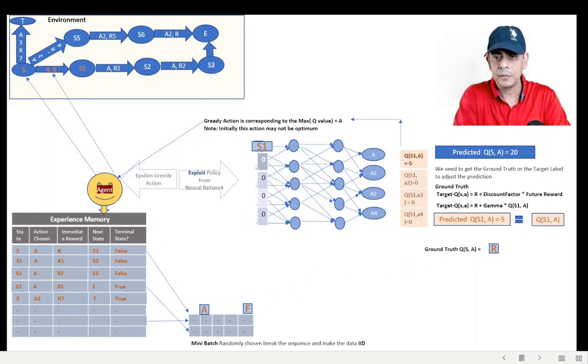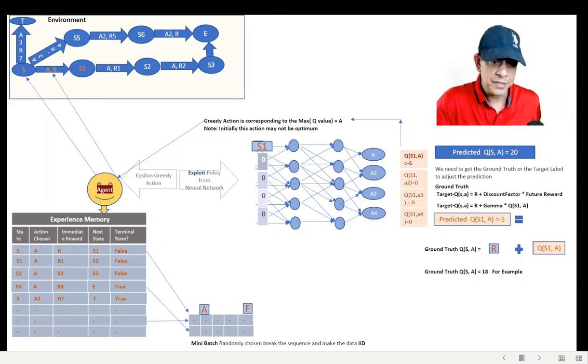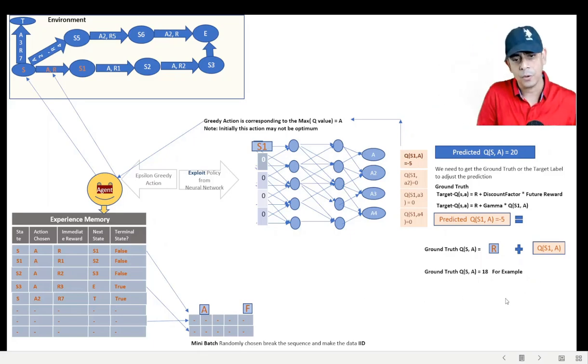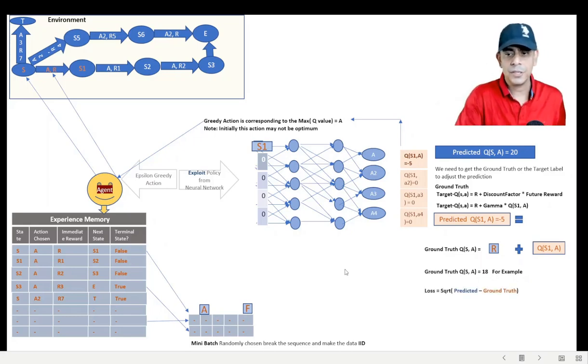Take the R from there, from the tuple, apply the Q(S1,A) which the network has given to you, and there you go, you have got the ground truth. Now along with this batch data, you are going to store the label data or the ground truth data also.